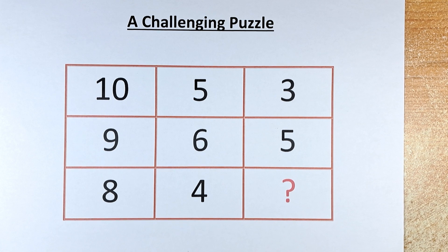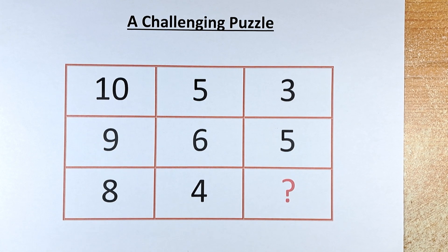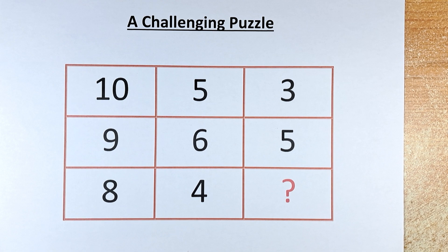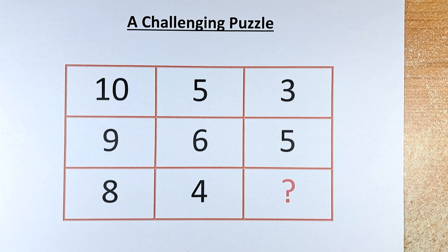In the first row, we have 10, 5 and 3. In the second row, we have 9, 6 and 5. And in the final row, the numbers are 8, 4 and the question mark.